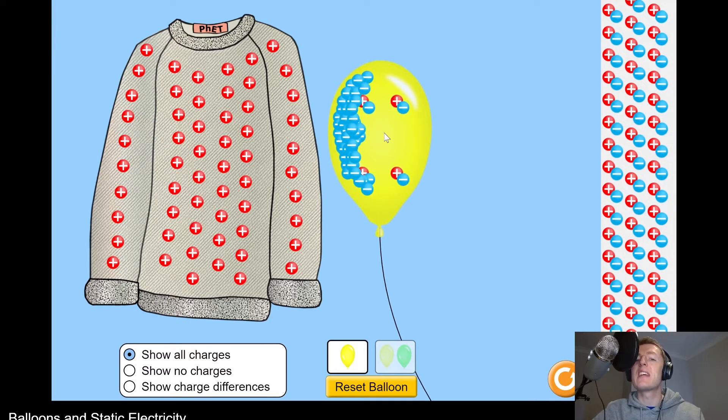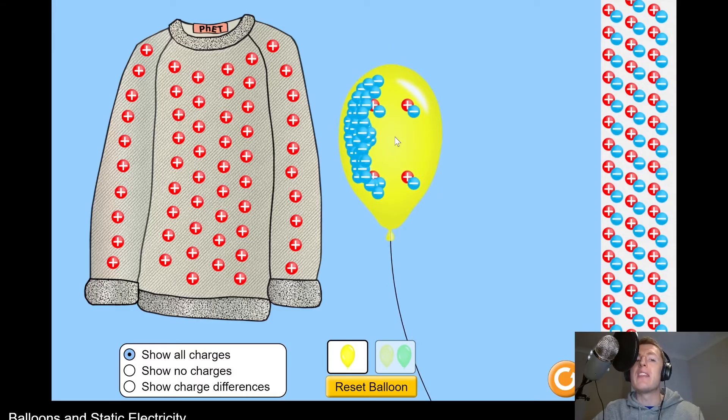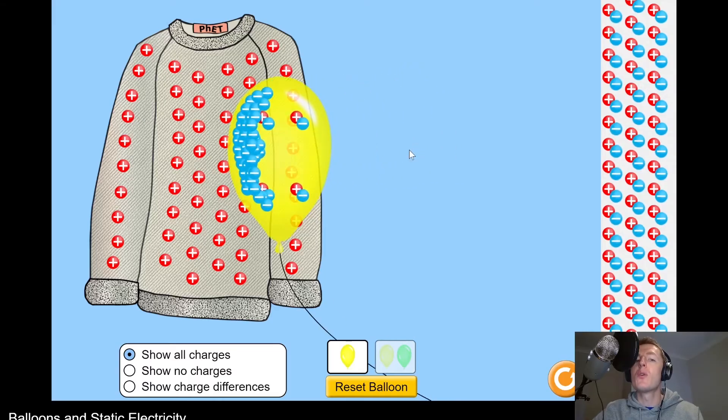So because we've now got a net negative charge on the balloon's surface and a net positive charge on the jumper, then if I let the balloon go, you'll notice that it attracts towards the positively charged jumper. And that's because, remember we said positive and negative charges will attract each other, opposite charges attract.